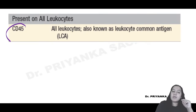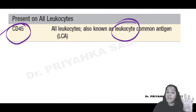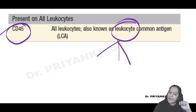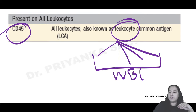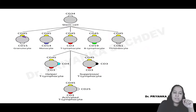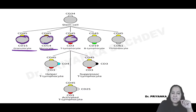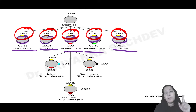The second important CD marker is CD45, which is present on all five types of WBCs - whether granulocytes or agranulocytes: neutrophil, eosinophil, basophil, monocyte, and lymphocyte. CD45 is also known as LCA - Leucocyte Common Antigen - because it is present on all WBCs. Please learn it. So CD45 = LCA is the common marker for all WBCs.